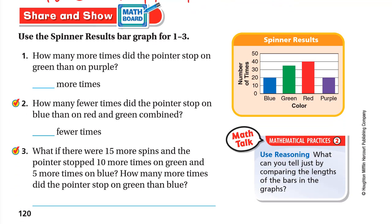Now for Share and Show, we use the spinner results bar graph. Number one: how many more times did the pointer stop on green than on purple? Since it's 'how many more,' we subtract. Green is in the middle between 30 and 40, so it's 35. Purple is right at 20. So 35 minus 20 equals 15 more times.